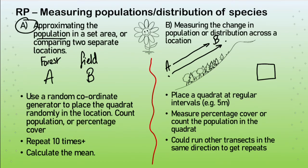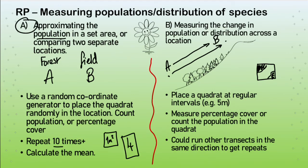In each quadrat, you might count population directly or do a percentage cover — for example, if daisies cover 40% of the quadrat, you record that. You take maybe 10 repeats across the location; the more you do, the more accurate. You calculate a mean — say, four daisies per square metre on average. You then scale up: if there are four per metre squared and the field is 1,000 metres squared, you estimate 4,000 daisies across the whole field. This saves time rather than counting individually.